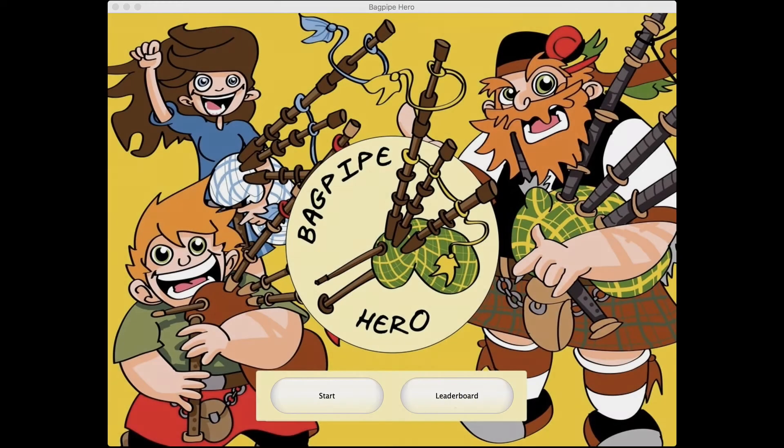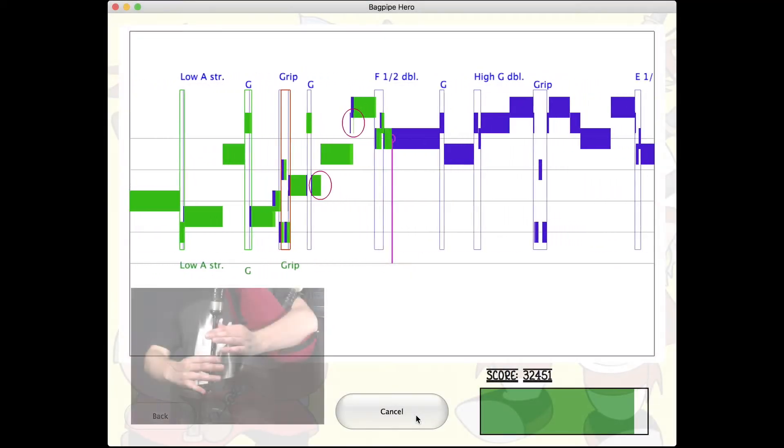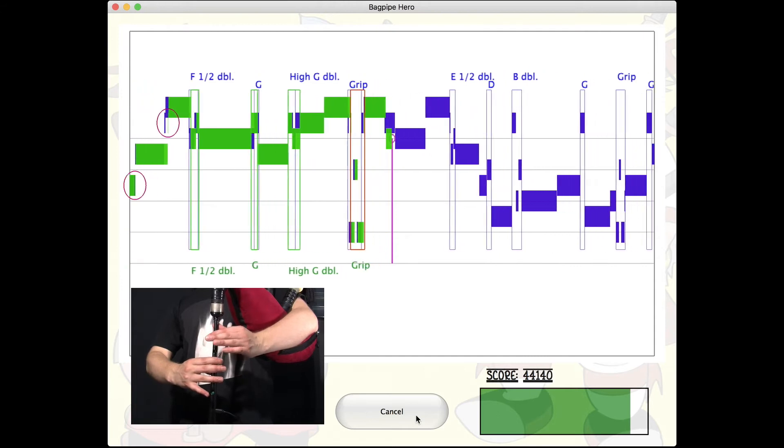The Ornament Recognition Algorithm also allows automatic performance scoring in a musical game environment, giving younger players a fun and engaging way to practice and measure their progress.